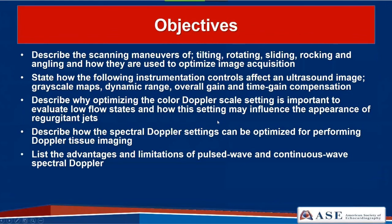Our learning objectives for today will be to describe the scanning maneuvers of tilting, rotating, sliding, rocking, and angling and how they are used to optimize image acquisition. We will also state how instrumentation controls—including grayscale map, dynamic range, overall gain, and time gain compensation—affect an ultrasound image. We will describe why optimizing the color Doppler scale setting is important to evaluate low flow states, and how it may influence the appearance of regurgitant jets, as well as spectral Doppler settings for Doppler tissue imaging, and list advantages and limitations of pulse wave and continuous wave spectral Doppler.